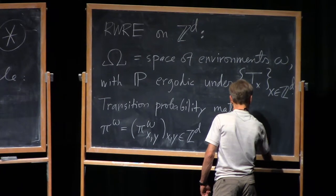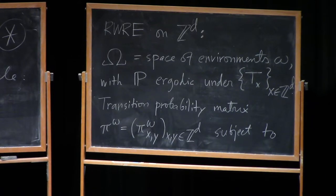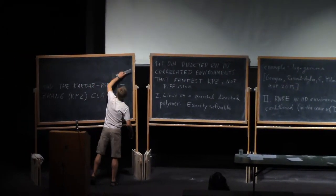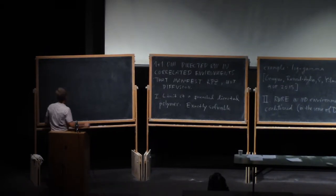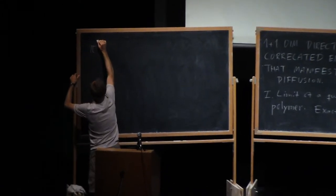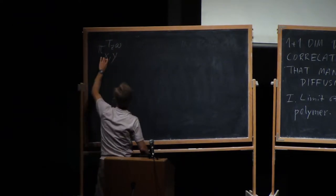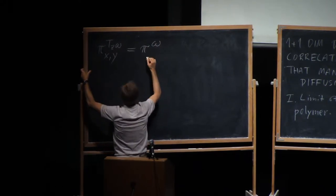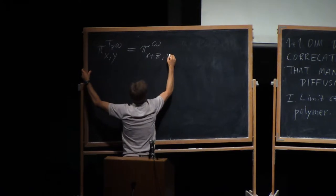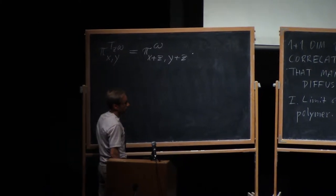And the assumption is that this transition probability matrix respects these translations here. So, the assumption is that if you shift the environment, then that's the same as translating or shifting the lattice arguments. So, if I look at a shifted environment, T_Z of omega, and the probability of jumping from X to Y, then that's the same as, under the original environment, jumping from X plus Z to Y plus Z. So, there's that structure.